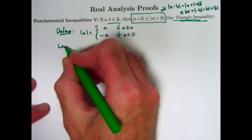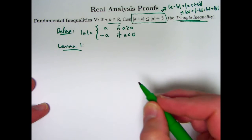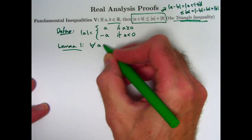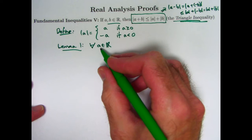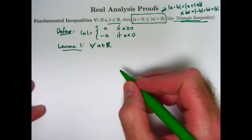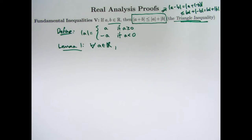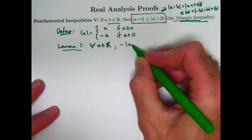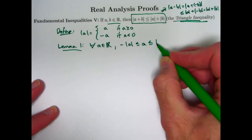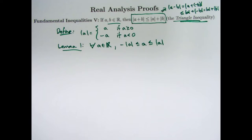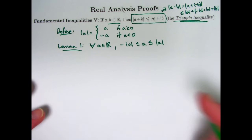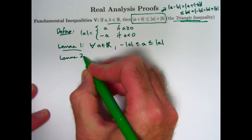Lemma one: for any real number a, you can say that a is between the negative of the absolute value of a and the absolute value of a itself — that is, negative |a| ≤ a ≤ |a|. I'll show a proof of this at the end of the video. I'm just going to accept this at the moment as one of three lemmas used to prove the triangle inequality. Examples are not proofs.